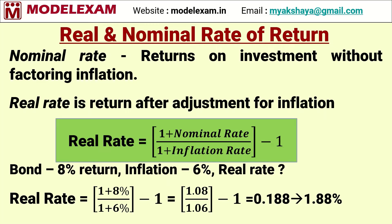These two returns are related through a formula. Real rate of return is equal to (1 plus nominal rate of return) divided by (1 plus inflation rate) minus 1.